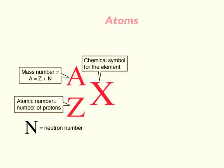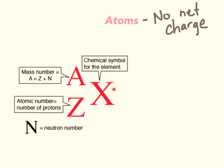Now we're going to find the number of subatomic particles for atoms. An atom, by definition, is going to have no net charge, which means the positive charges cancel out the negative charges and the overall charge is zero. This is nuclear notation right here. You're going to have the symbol, and you're going to have the mass number. The mass number is different than the average atomic mass — it's going to be for one specific atom, so it will be a whole number every time.